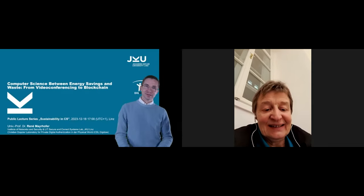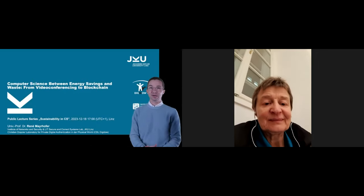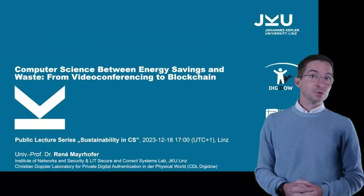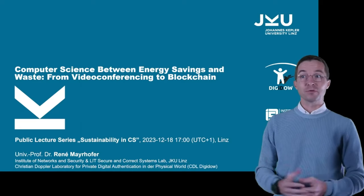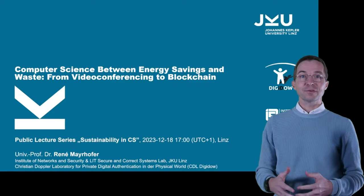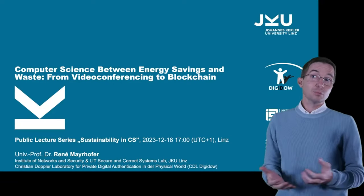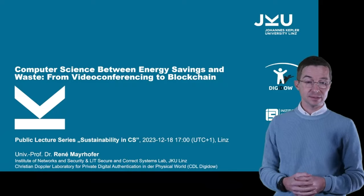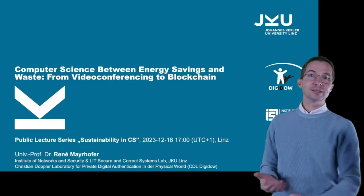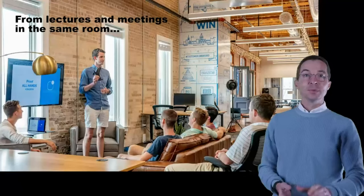Thanks a lot for organizing this Ring Lecture. I think it's really important to have these conversations. What I have in the title is that we have both solutions that can actually help, but we are also creating massive problems. In today's installment of this Ring Lecture, I would try to give a few examples of what solutions we can potentially provide and what problems we are causing as computer scientists. Let's talk about what has changed.